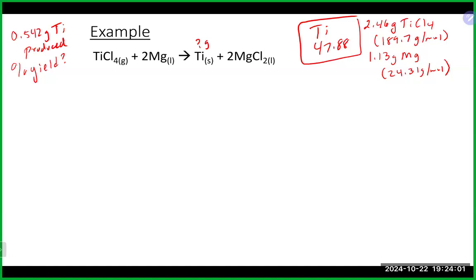I'm going to show you the ICE table approach. No matter which of the three methods you use, the first two steps are pretty much the same. We need a balanced equation, which we have. We also know this is a limiting reagent problem because we have grams of TiCl₄ and grams of magnesium — meaning we can get moles of both reactants.